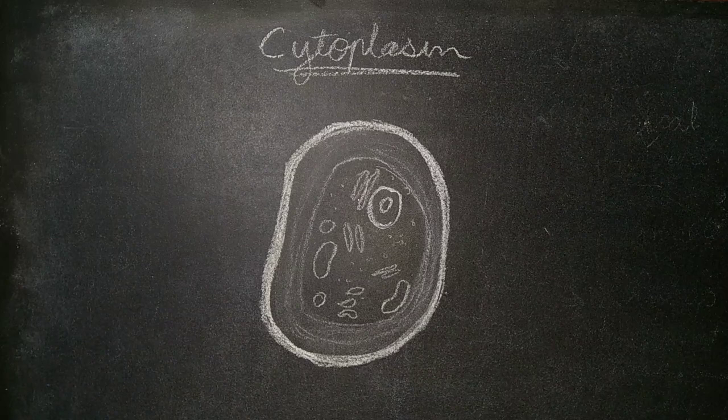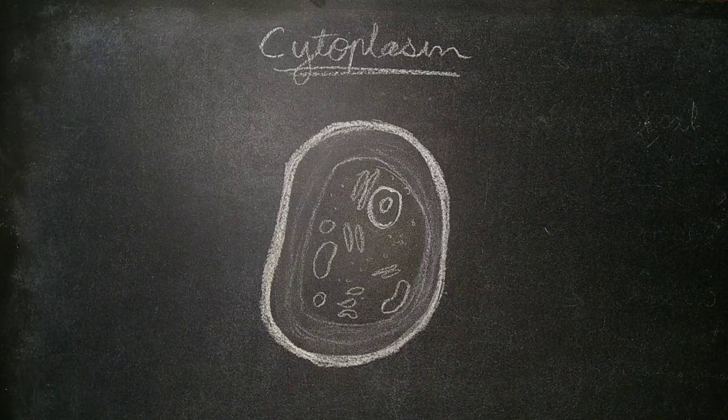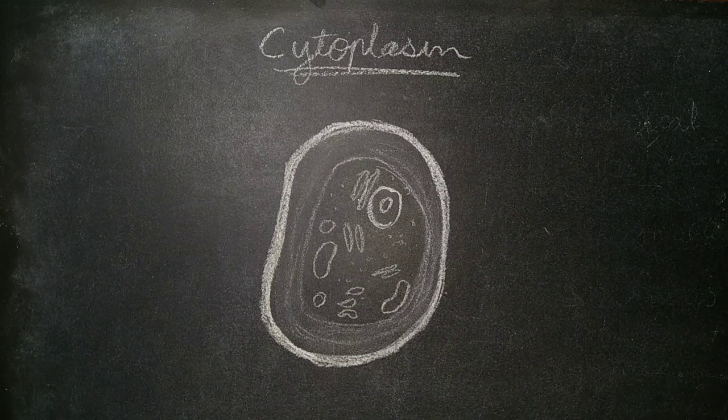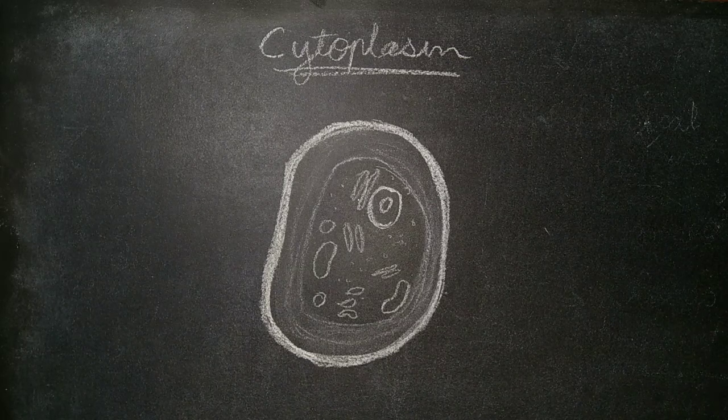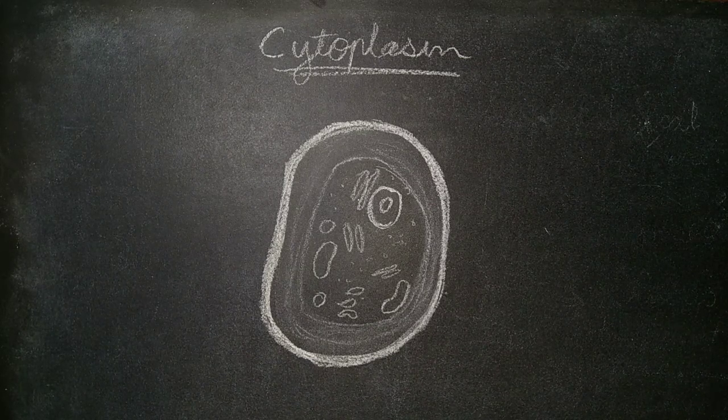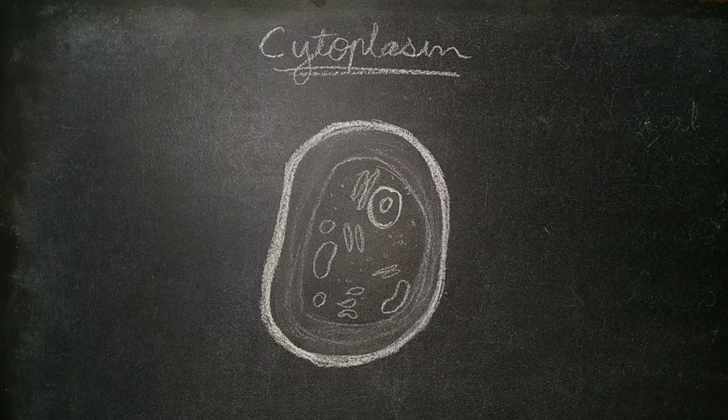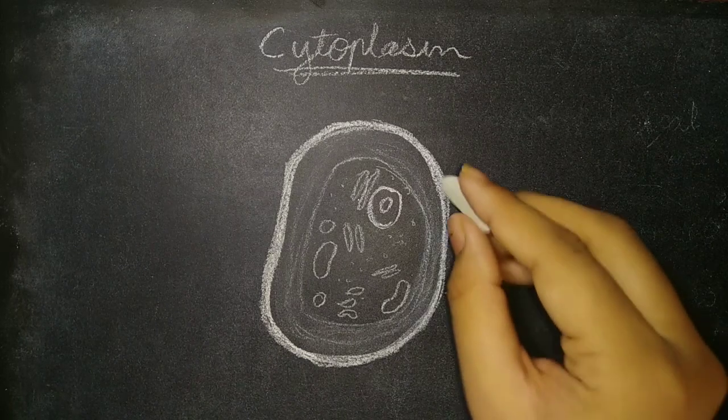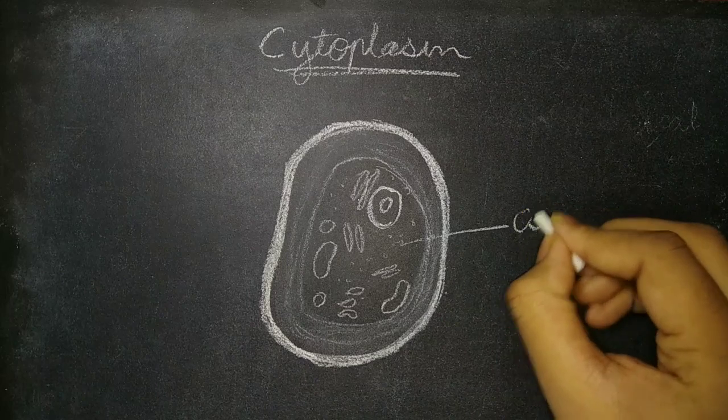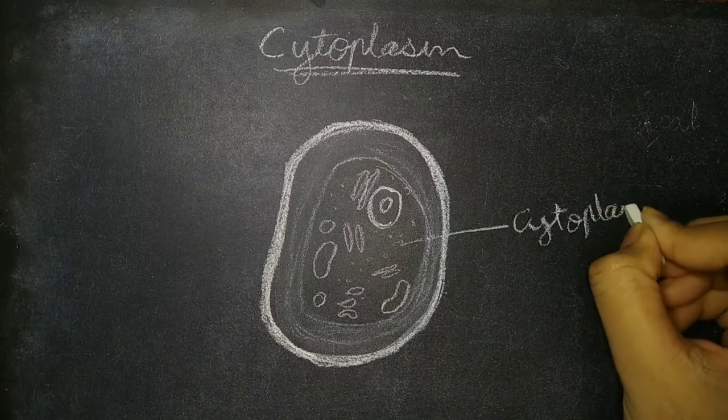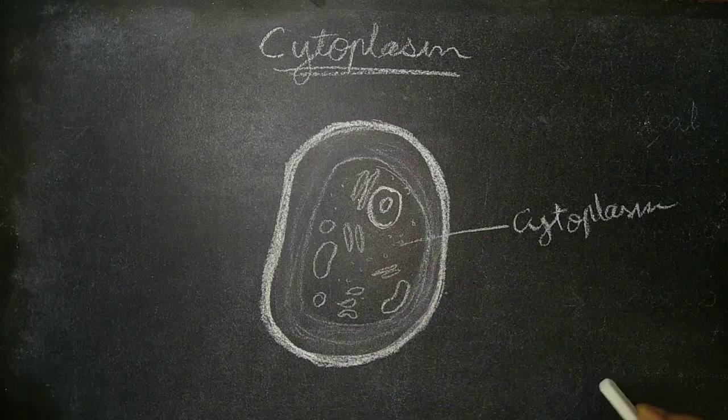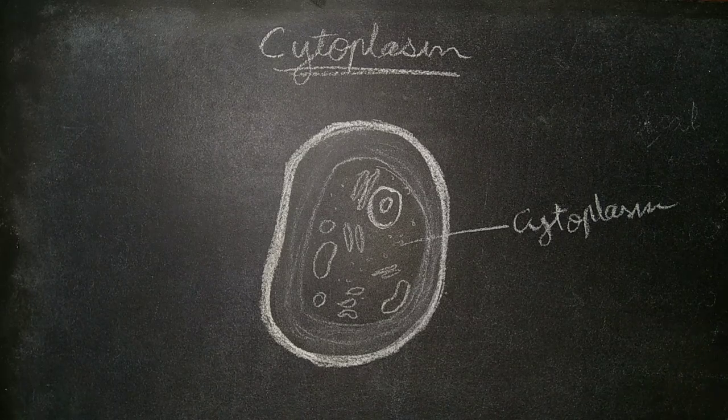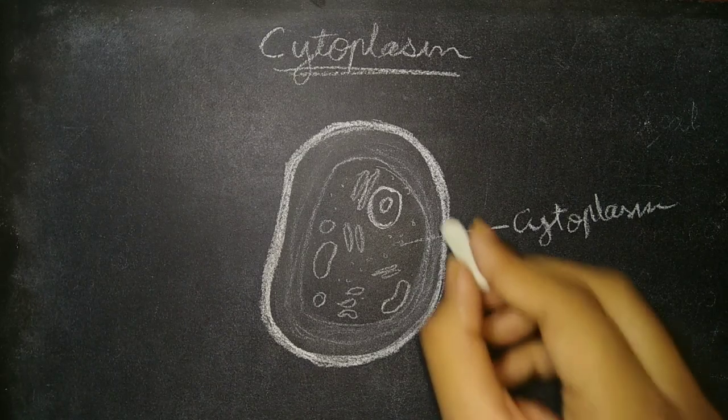Now let us discuss cytoplasm. The cytoplasm is the part of the cell that is enclosed within the cell membrane. In prokaryotic organisms which lack a nucleus, all contents are within the cytoplasm. In eukaryotes, the contents of the cell nucleus are separated from the cytoplasm. Here in this diagram you can see the cytoplasm, and all organelles are inside it, but they are distinguished by their cell membranes. This is the nucleus.